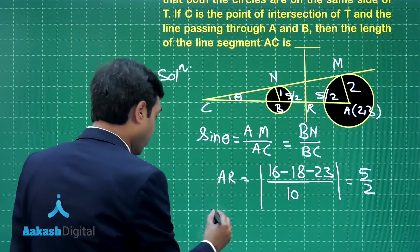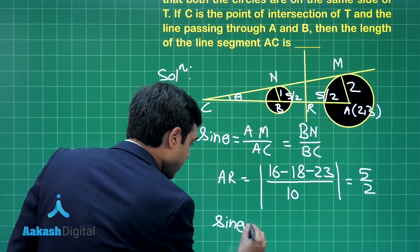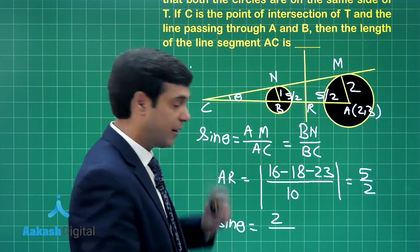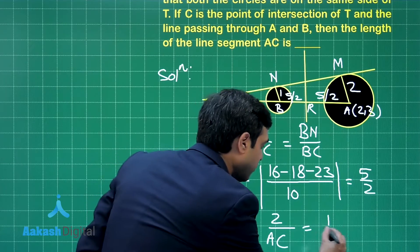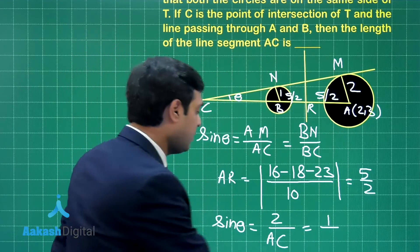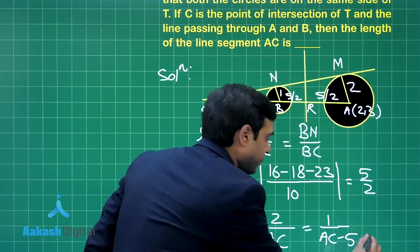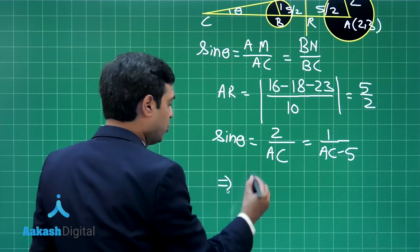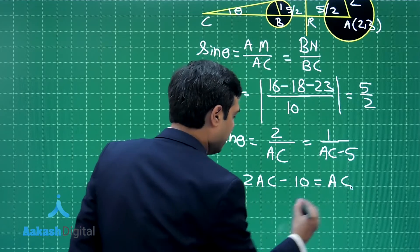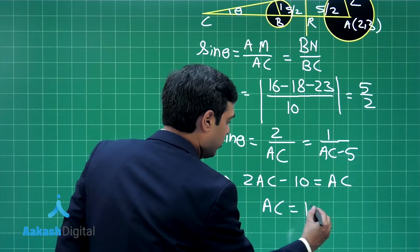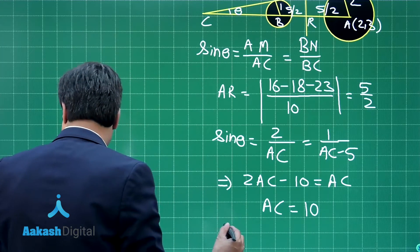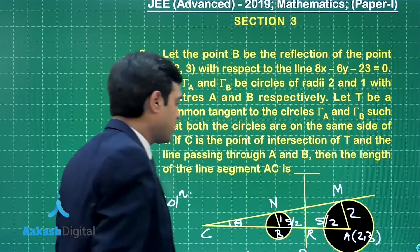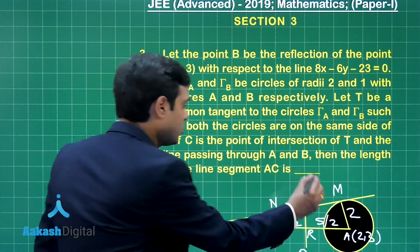Applying the sine-theta condition: 2/AC = 1/BC, where BC = AC - 5 (since AB = 2×AR = 5). Cross-multiplying: 2(AC - 5) = AC, giving 2·AC - 10 = AC, so AC = 10. The correct answer is AC = 10.